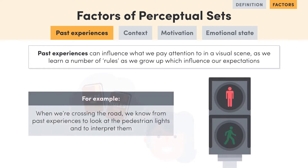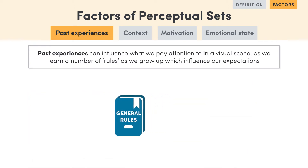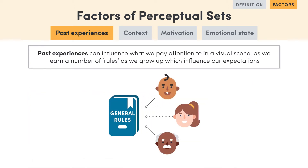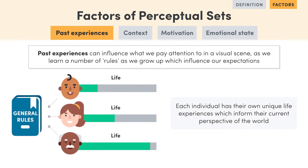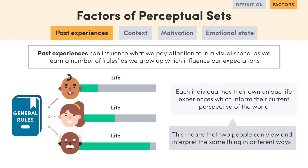An example of this is when we're crossing the road, and we know from past experience to look at whether the sign is red or green, which signals whether we should wait or walk. While there might be some general rules and expectations that guide our perception, each individual has their own unique life experiences, which informs their current perspective of the world. This means that two people can view and interpret the same thing differently.